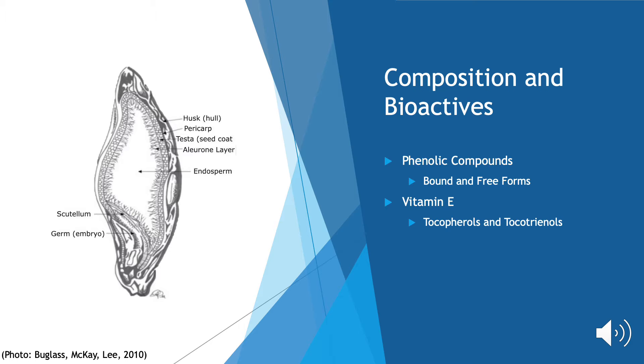Vitamin E is found in two forms: tocopherols and tocotrienols. Tocopherols are mainly found in the germ of the plant, whereas tocotrienols are primarily located in the pericarp or endosperm.